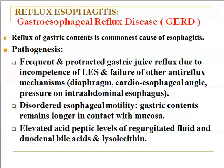Disorder of esophageal motility means gastric content remains in longer contact with the mucosa when there is a defect in the peristalsis movement of the esophagus. This prolonged contact leads to inflammation and later ulceration. Elevated acid-peptic levels of the regurgitated food, duodenal bile acids, and lysolecithin also contribute.